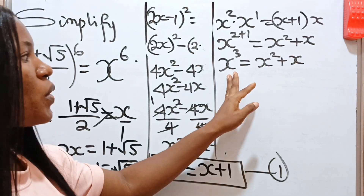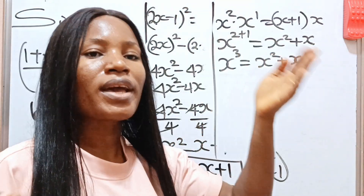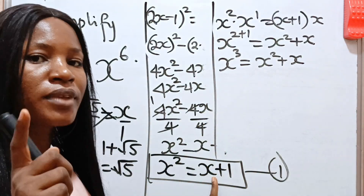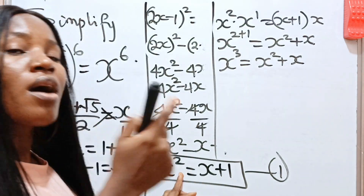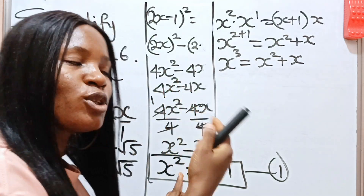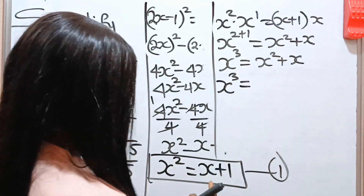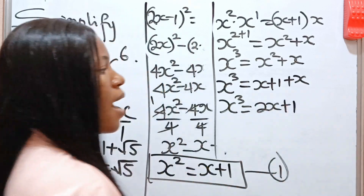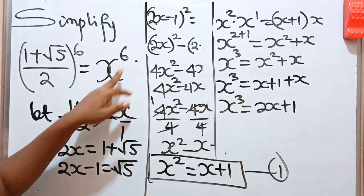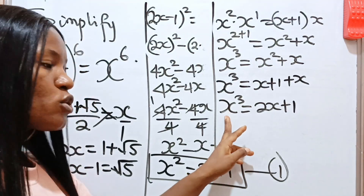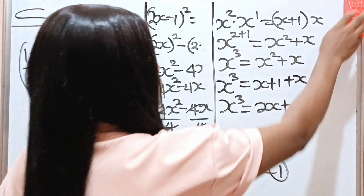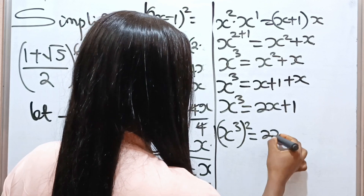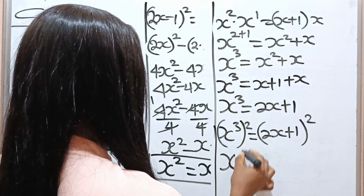This is what we have: x³ = 2x + 1. Remember we need x to the power of 3, so that when we square it we get x⁶. Whatever you do to one side, always do it to the other side. So we write this as (x³)² equals (2x + 1)², which gives us x⁶ on the left side — exactly what we are looking for.